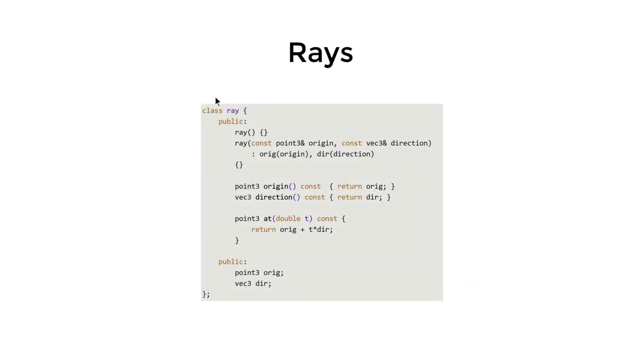The ray implementation in the book is quite simple, just mainly boilerplate, except this function where we actually plug t in to get the result of the ray function.